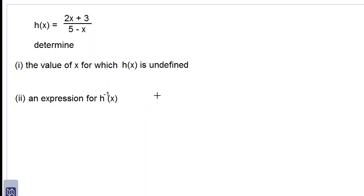Good day everyone. We are working on this functions question. H of x is equal to 2x plus 3 all over 5 minus x. Determine the value of x for which h of x is undefined.